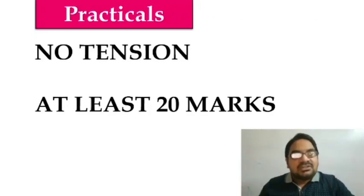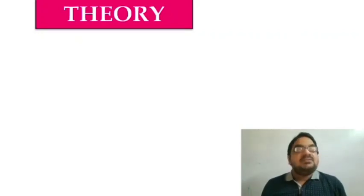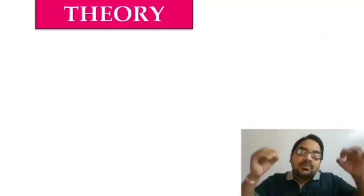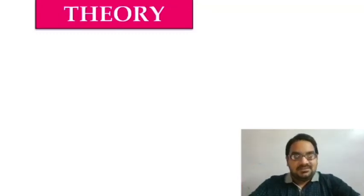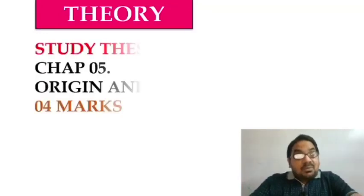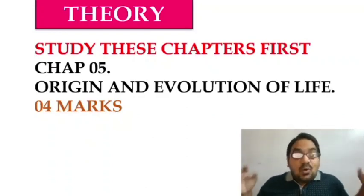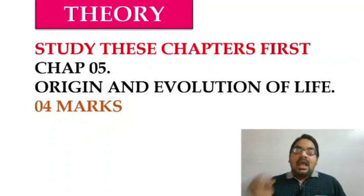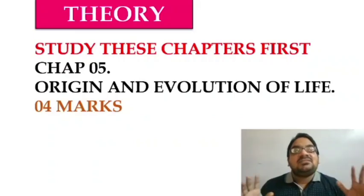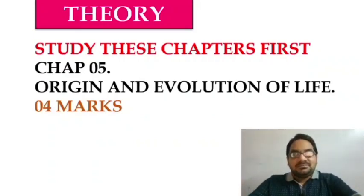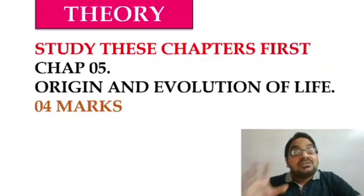Now I will not tell you about the whole theory of the 15 chapters, but I will tell you about those chapters which are either very easy or they have so much deletion that they will give you easy marks. The first chapter which has very good deletion and which will get you marks is chapter number 5, Origin and Evolution of Life. There are two subtopics in this chapter. It is a very easy chapter.